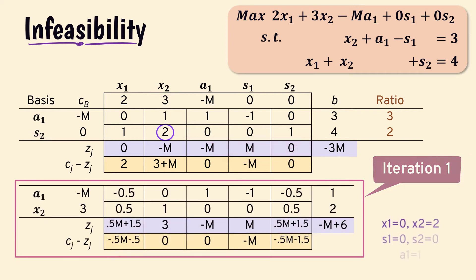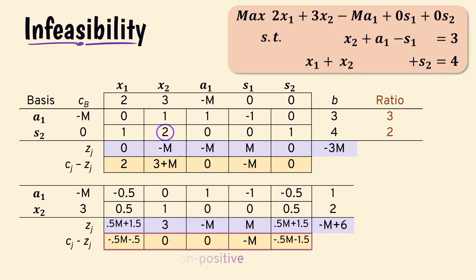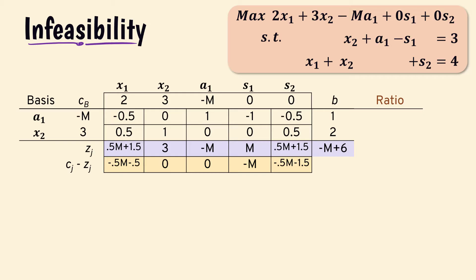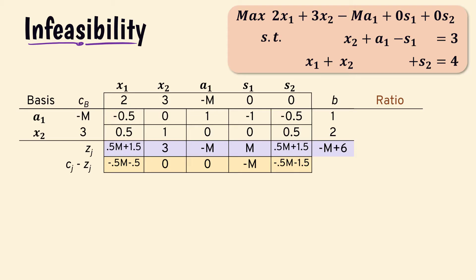At the first iteration, we have the following result. Since all the values in the net evaluation row are non-positive, we should have reached an optimal solution. However, the artificial variable a1 is still in the basis with a positive value of 1. Normally, the artificial variable should be eliminated by the time we reach an optimal solution, but it's still there with a positive value. Therefore, we have an infeasible solution.